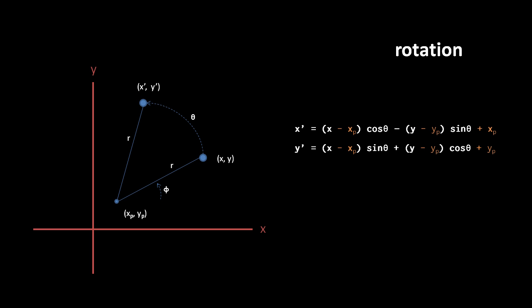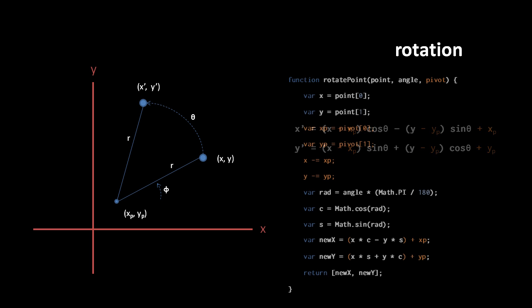In our formula, we subtract x of the pivot from x of our point, and y of our pivot from y of our point, but also add x of the pivot to the x prime, and y of the pivot to y prime. It's actually a bit easier to understand in the discrete steps of code. In our rotate function here, we've added a third parameter which takes a pivot coordinate, another array of an x and y value. We then unpack this coordinate as xp and yp, subtract them from our x and y, but then at the end add them back into our new x and new y values. With this function, we can now rotate a point around any pivot point.